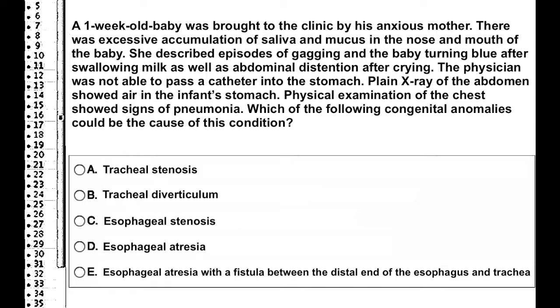This is a question where you have to look at a few different keys. One is that there was an accumulation of saliva and mucus in the nose and mouth of the baby, and the gagging without large amounts of food and not vomiting will be a sign that there's a short pouch. There's also difficulty passing a catheter, which means there's probably an atresia.